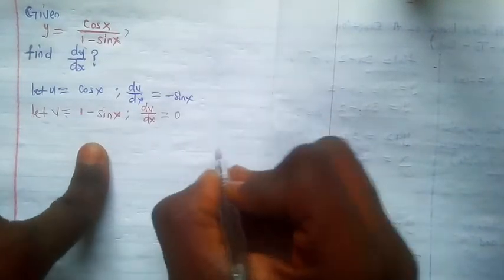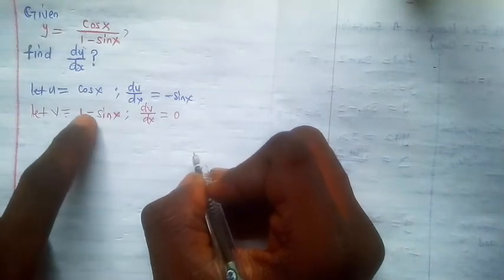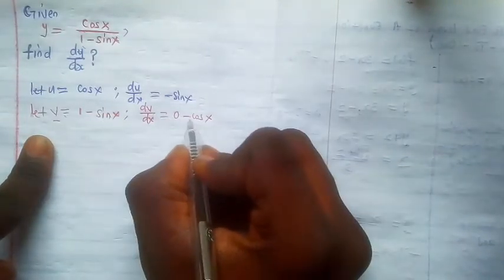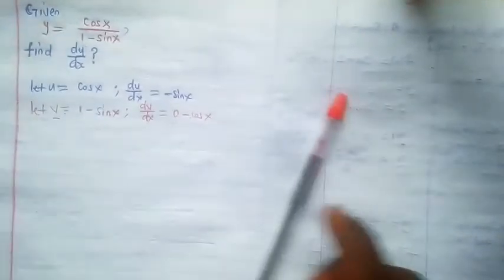The derivative of a constant with respect to x is 0. Now the derivative of sine x is cosec x, so the derivative of negative sine x is just negative cosec x. So the result of differentiating v with respect to x is just negative cosec x.